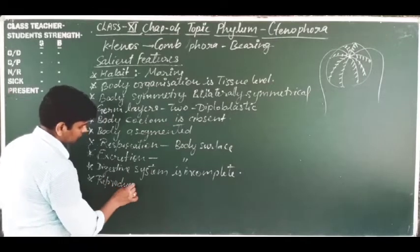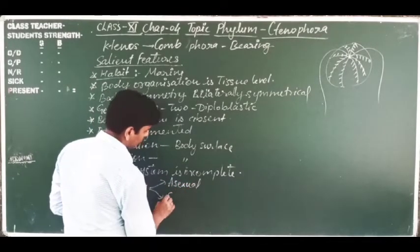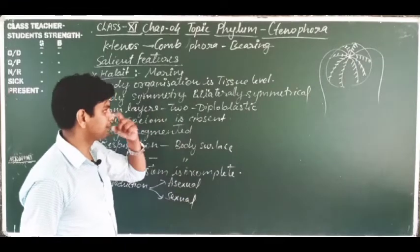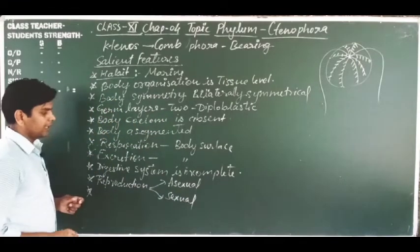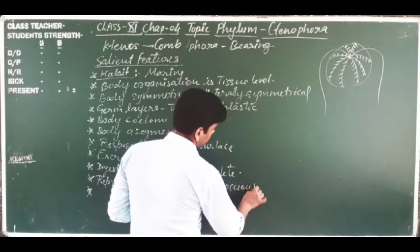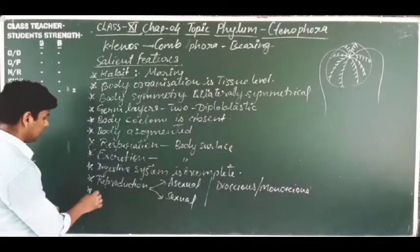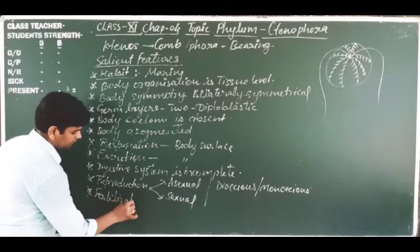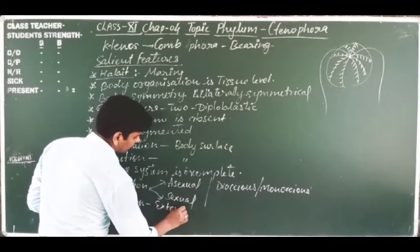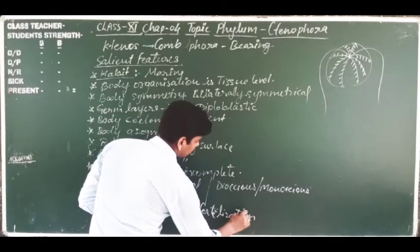Reproduction occurs in two ways: asexual and sexual reproduction. These animals may be dioecious or monoecious, so the sexuality of these animals can be either. Fertilization occurs externally — because they live in water, the fertilization is external fertilization.